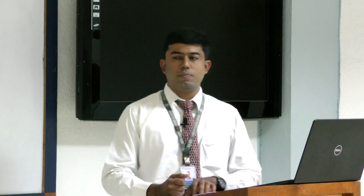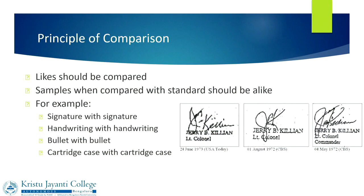The next principle is the principle of comparison, which basically states that like should be compared with like — similar objects should be compared with similar objects. Handwriting should be compared with handwriting, signature with signature, a bullet with a bullet, and a cartridge case with a cartridge case. This way we can find individual characteristics pertaining to that particular material.